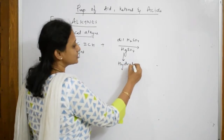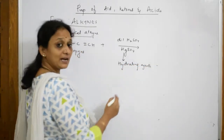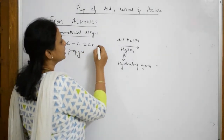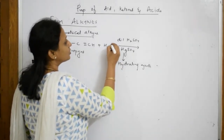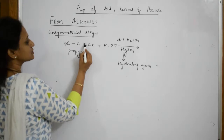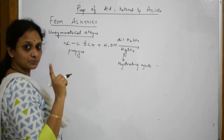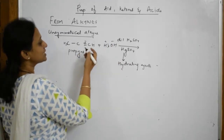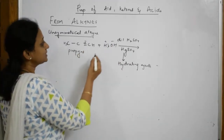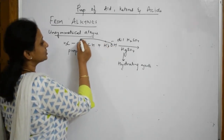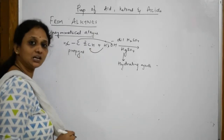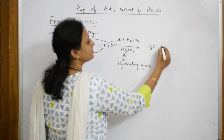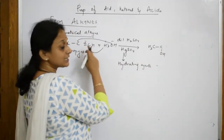What is the role of these two reagents? Dilute H₂SO₄ and HgSO₄ are hydrating agents. Hydrating agents add water — they break this bond and add water to it. Now, this is an unsymmetrical alkyne, so the OH goes and attacks the carbon with fewer hydrogens, and the H comes and attacks the other carbon.